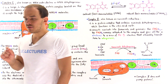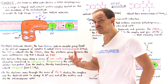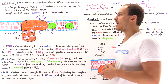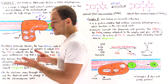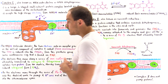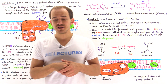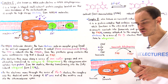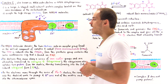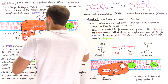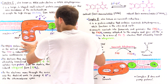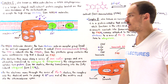Complex 1 is a very large complex — an L-shaped multi-subunit structure that contains about 46 individual polypeptide chains. Complex 1 is also known as NADH dehydrogenase or NADH oxidoreductase. It is the complex of the electron transport chain that accepts the high-energy electrons from NADH molecules generated in processes such as the citric acid cycle and glycolysis.